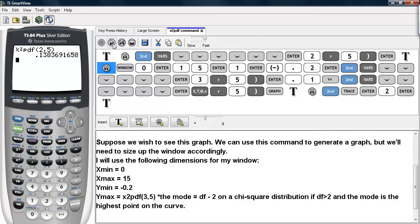So we'll go ahead and size up our window according to these dimensions, and then we'll be able to type in our function and graph it. So we have the scaling, and then we have the y-min at negative 0.2. Then y-max.